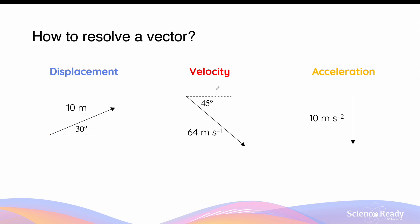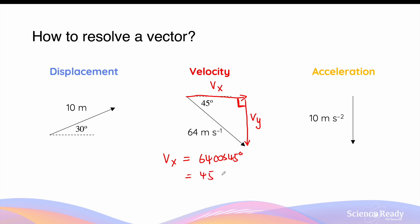Like displacement, velocity is also a vector, which means it can also be resolved into two perpendicular components. We'll start with the tail of the vector and join it to the head of the vector via two perpendicular components, such that they form a right angle. In this example, this is Vx, the horizontal component, and this is Vy, the vertical component. Vx is the adjacent side, so Vx is equal to 64 cosine 45 degrees, which is 45 meters per second to the right. Vy is the vertical component and that's the opposite side, so 64 sine 45 degrees, which also gives 45 meters per second down page.